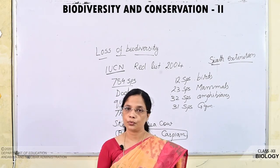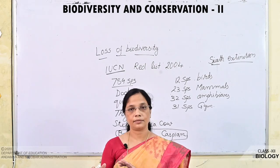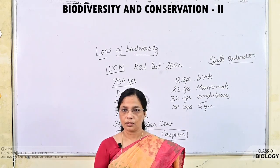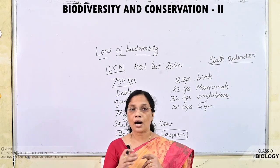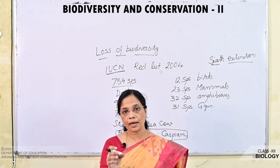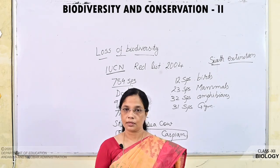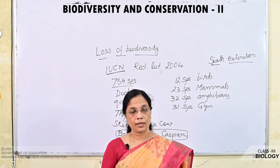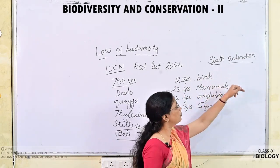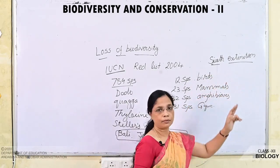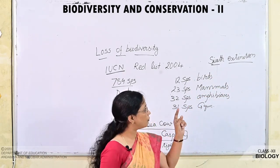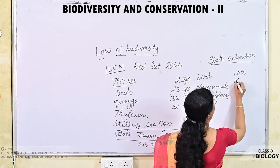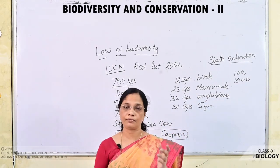Gradually they changed into unicellular eukaryotes, then multicellular organisms, and eventually into plants, animals, and so on. At those times also there was mass extinction. Human beings appeared on earth about 1.5 million years ago, so the five earlier episodes happened before the appearance of human beings. The present episode, after the appearance of human beings, is called the Sixth Extinction. This extinction is said to be more devastating because its rate is about 100 to 1000 times higher than the five earlier episodes — and it is due to human activity.